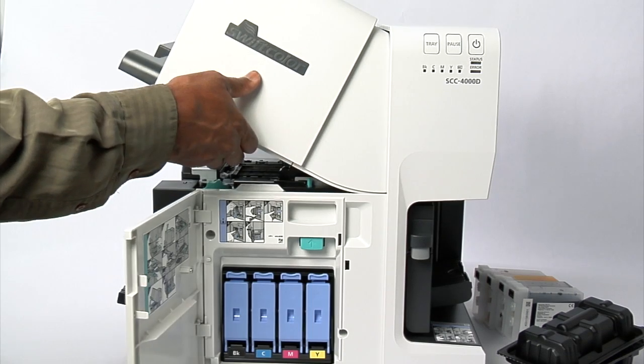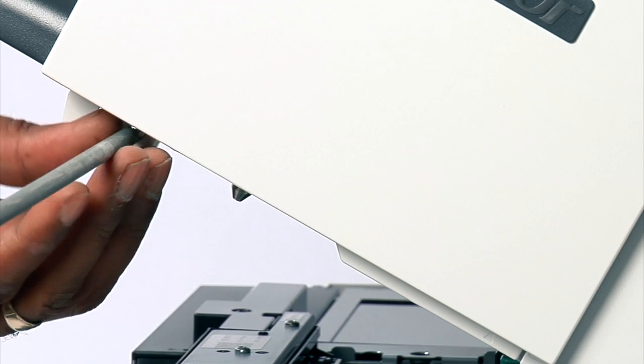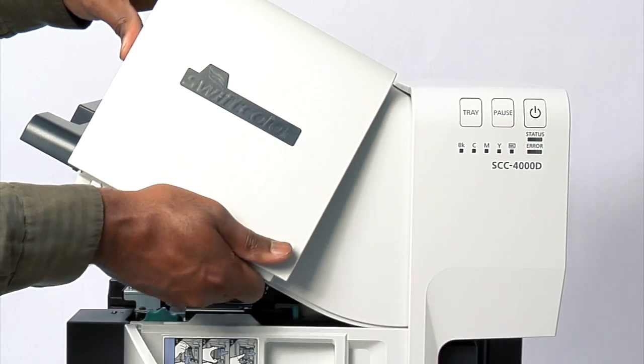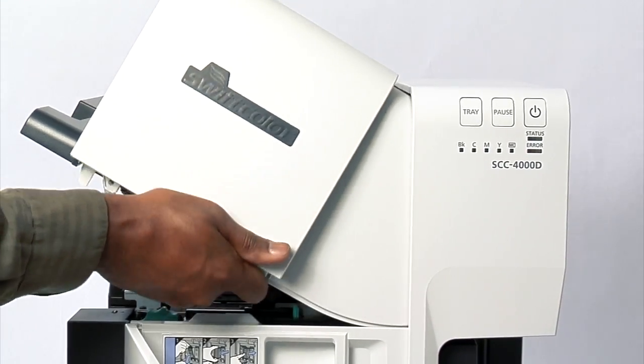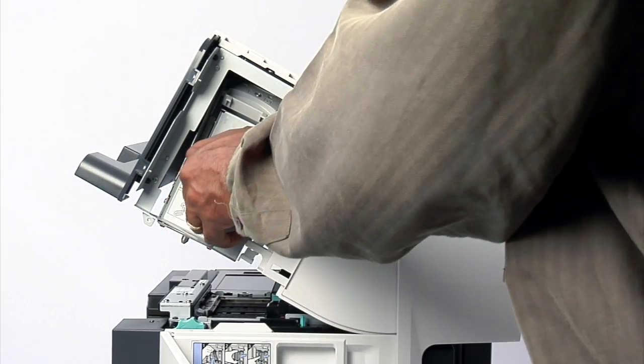Push down the upper unit open lever to open the top of the printer. With a Phillips screwdriver, remove the screw securing the maintenance cover. Next, remove the cover. Remove the packing tape that secures the print module. Remove print module cover.